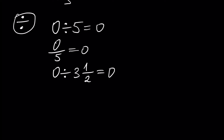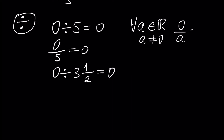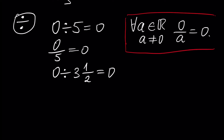We can write generally: for any real number a which is not zero — for any non-zero real number a — if we divide zero by a, we will have zero. That is true, and let's not go into philosophical problems in mathematics; let's stay clear and simple.